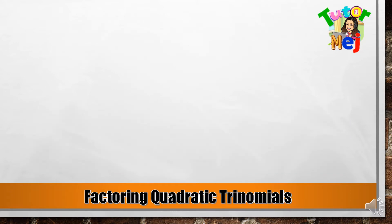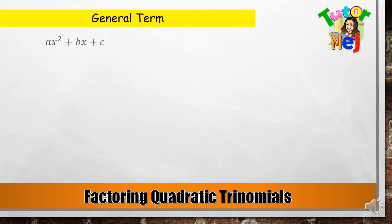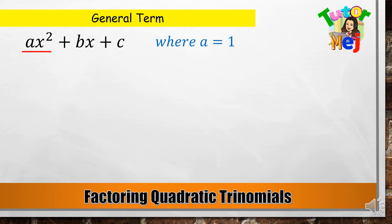Talakayan natin ngayon ang factoring quadratic trinomials. Meron tayong tinatawag na general term: ito yung AX squared plus BX plus C, where A equals 1. Ang AX squared ito yung ating first term. Ang BX ito yung ating middle term. At yung positive C, ito yung ating last term.